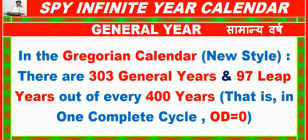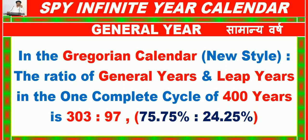In the Gregorian Calendar (New Style), there are 303 general years and 97 leap years out of every 400 years (1 complete cycle, OD = 0). The ratio of general years to leap years in the 400-year cycle is 303:97, or 75.75% to 24.25%.